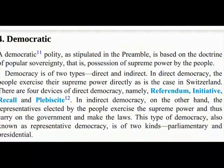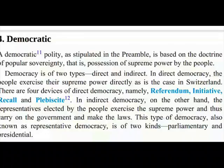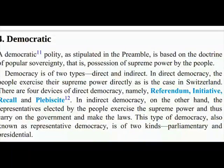4. Democratic. A democratic polity, as stipulated in the preamble, is based on the doctrine of popular sovereignty, i.e., possession of supreme power by the people. Democracy is of two types: direct and indirect. In direct democracy, the people exercise their supreme power directly, as is the case in Switzerland. There are four devices of direct democracy: referendum, initiative, recall and plebiscite. In indirect democracy, the representatives elected by the people exercise the supreme power and thus carry on the government and make the laws.